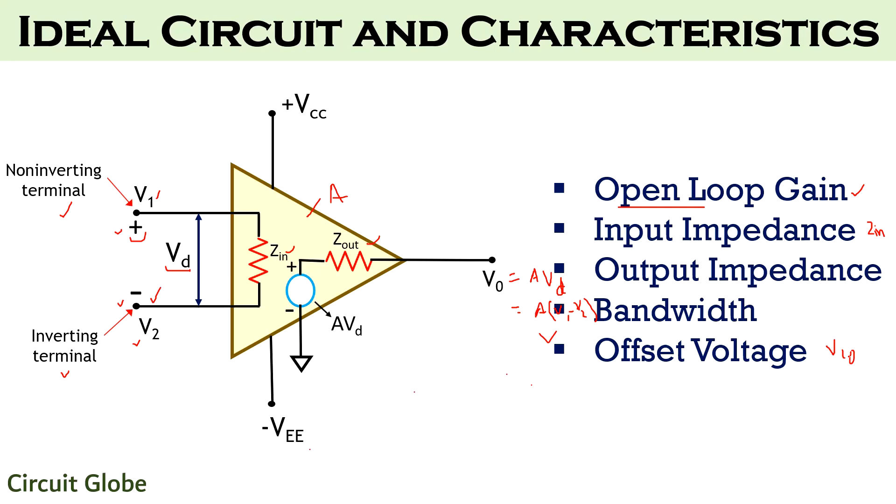The last characteristic is offset voltage and is represented by VI0. Ideally, it should be zero. This will be zero when the voltage difference of the applied input is zero. That is, VD must be zero. But in reality, op-amps have some amount of output offset voltage and so its value is not zero.